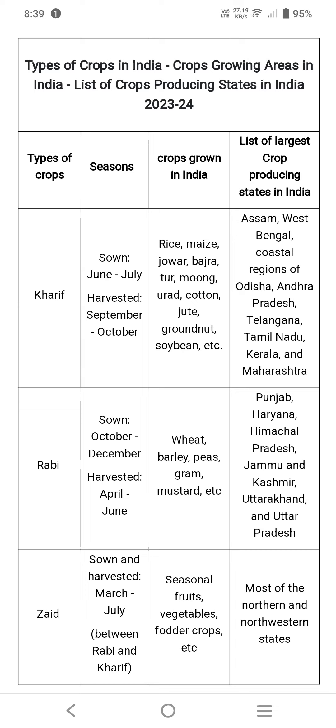Types of crops in different seasons: Kharif means sowing time is June-July and harvesting time is September-October. Rabi sowing time is October-December and harvested April-June. Zaid means summer season, harvested between March and July, and takes place between Rabi and Kharif seasons.